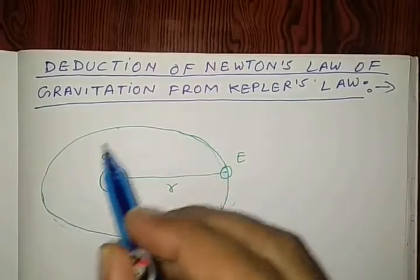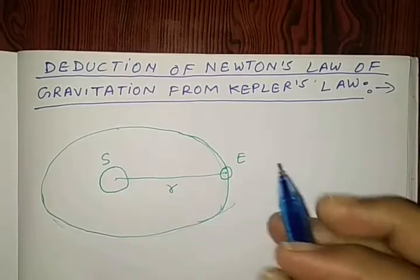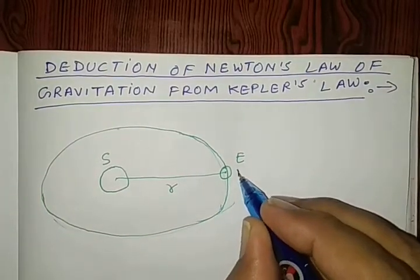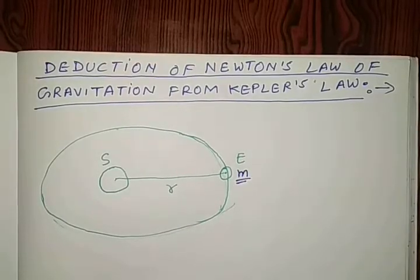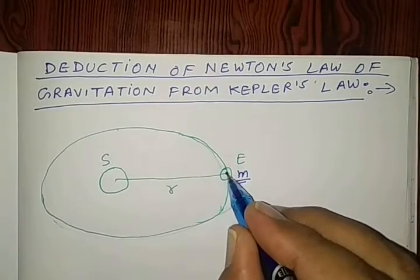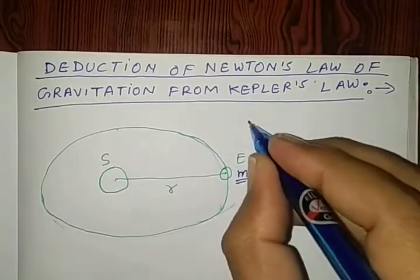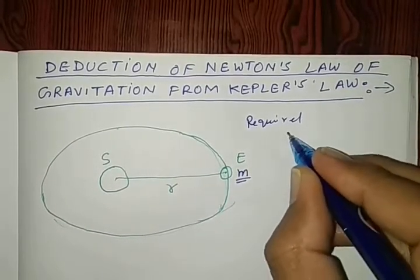around the sun in elliptical path, with average distance r, and let m denote the mass of earth. So, in that condition, when a body revolving circular path required centripetal force,